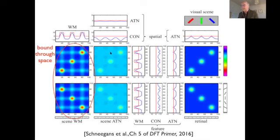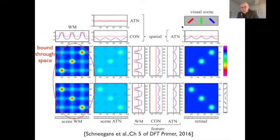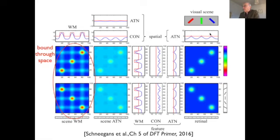The retinal input shifts as you shift your gaze, but that is not what you want to commit to working memory because you want to be able to refer to the object regardless of how you were looking when you first saw it. This framework makes that easy to conceive of: you can do a purely spatial coordinate transform that transforms the retinal-frame representation into a scene reference frame.